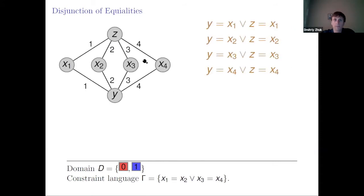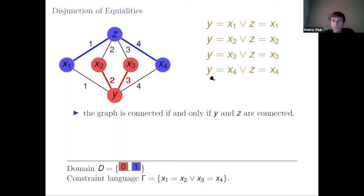What is the complexity of this problem? Consider an instance with one variable on top, one on the bottom, and all remaining variables connected to both. We add the constraint that every variable is either equal to Y or equal to Z. It is easy to see this graph is connected if and only if Y and Z are connected — meaning the instance has a surjective solution if and only if Y and Z are different.